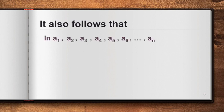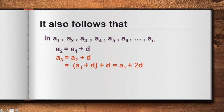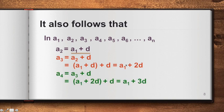It also follows that in an arithmetic sequence, a2 equals a1 plus the common difference d. And a3 equals a2 plus d, but since a2 is a1 plus d, then a3 equals a1 plus 2d. For a4: a4 equals a3 plus d, and since a3 is a1 plus 2d, then a4 equals a1 plus 3d.